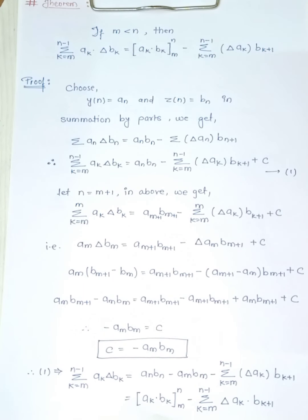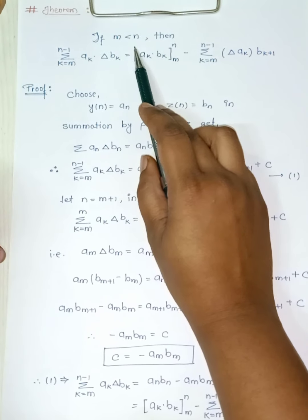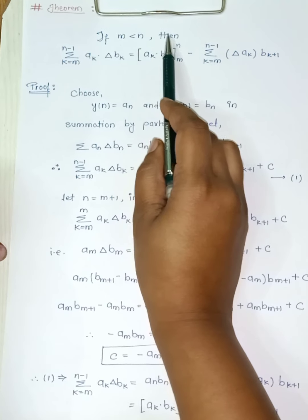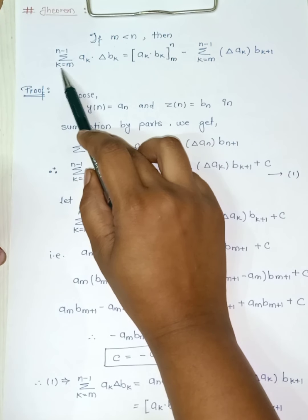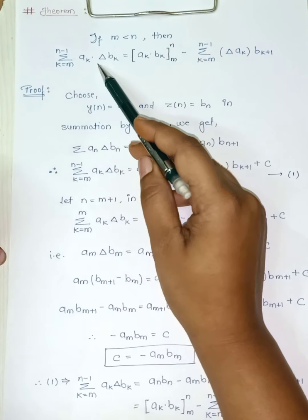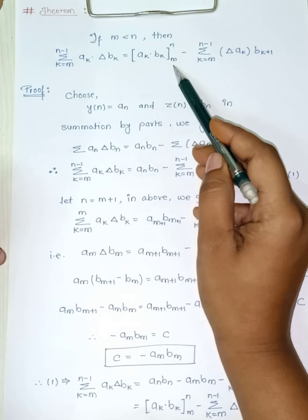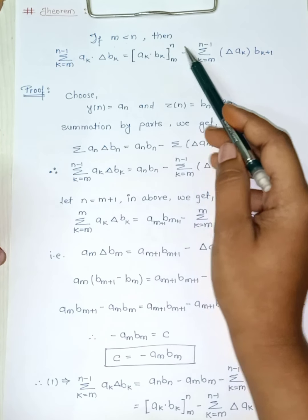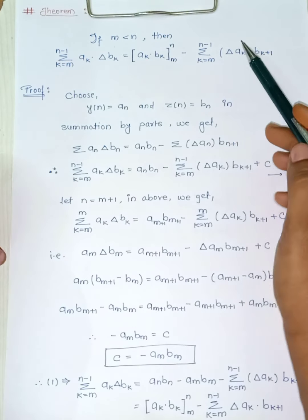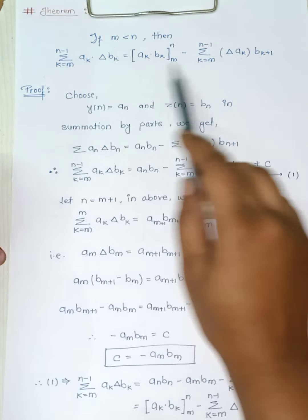The statement is: if m is less than n, then the summation from k equals to m to n minus 1 of a_k delta b_k equals a_k times b_k evaluated from m to n, minus the summation from k equals m to n minus 1 of delta of a_k times b_{k+1}.